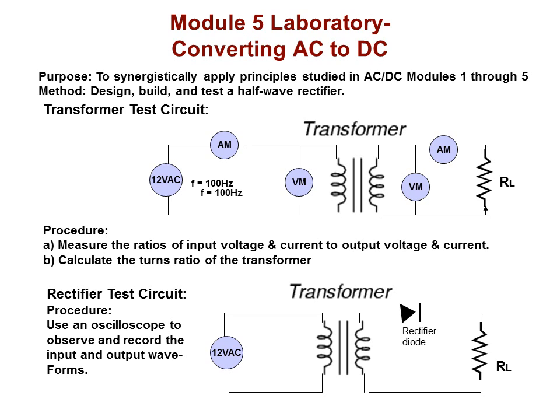We start off by building a transformer test circuit. We're going to give you a transformer that you can use to do this. You're going to measure the ratios of input and output voltage and current in order to determine the appearance ratio of this transformer.